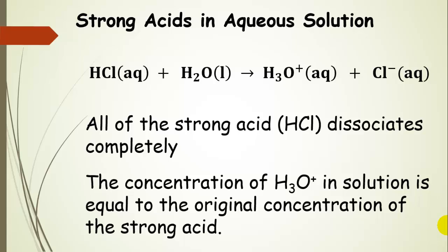All of the strong acid dissociates completely. This means that the concentration of hydronium in solution is the same as the original acid concentration. So if you have a strong acid in solution, whatever the concentration of your strong acid, that is the concentration of your hydronium ion.